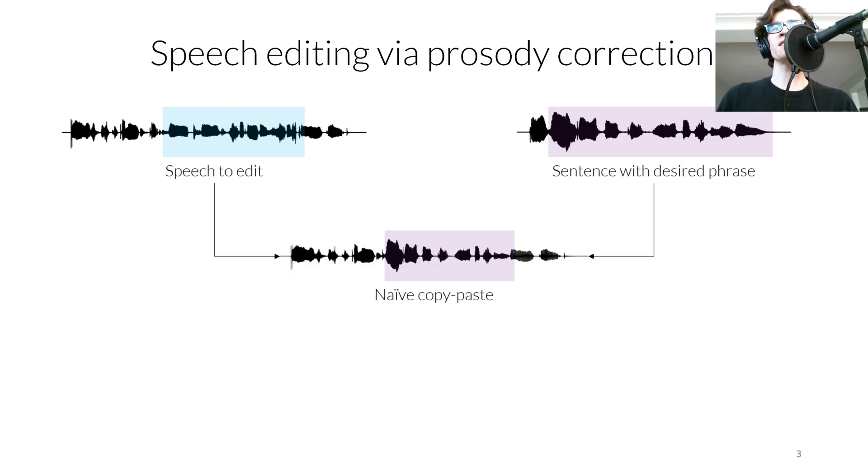We call this naive copy-paste, as the results often sound unnatural, like so. Alice was beginning to wonder about that rabbit she saw on the bank. Using prosody correction, we can edit the prosody of the naive copy-pasted example to have a more natural-sounding prosody. Ideally, our goal is to end up with a result that sounds like the following speech, which was re-recorded by a human with a more natural prosody. Alice was beginning to wonder about that rabbit she saw on the bank.